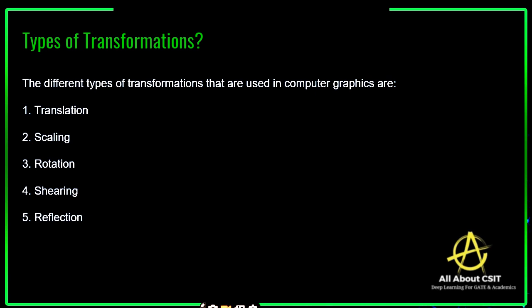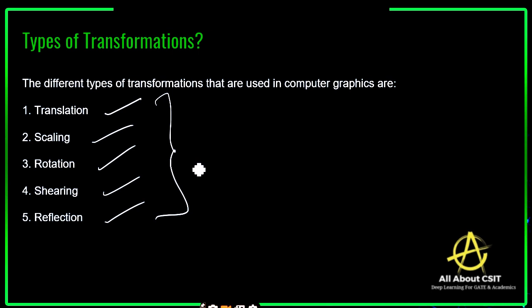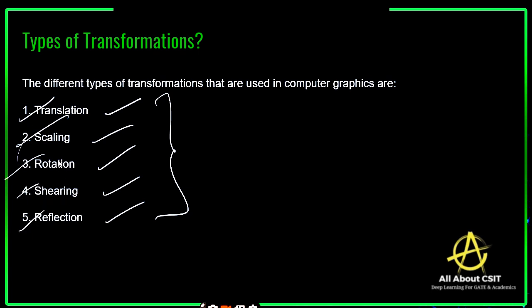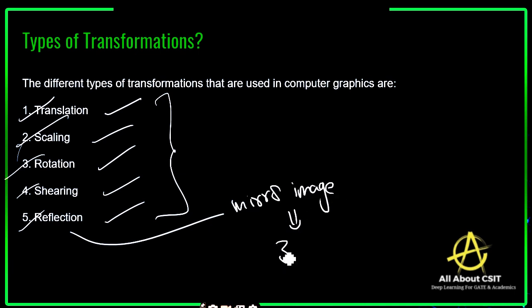The different types of transformations used in computer graphics are translation, scaling, rotation, shearing, and reflection. Translation changes the position of an object. Scaling increases or decreases the size of an object. Rotation rotates the object clockwise or anti-clockwise based on angle. Shearing slides the picture horizontally or vertically — slanting the image. And finally, reflection is nothing but the mirror image.